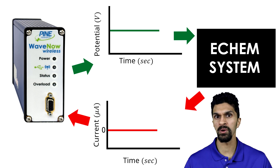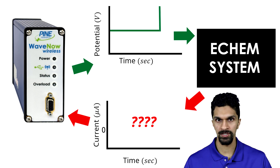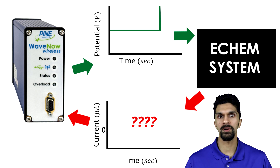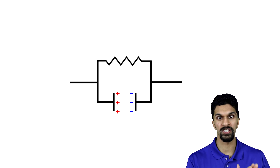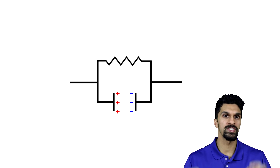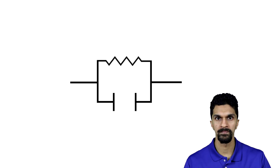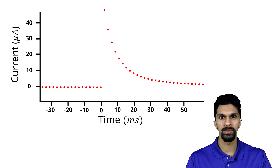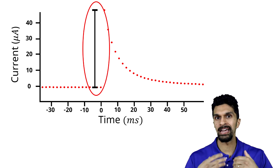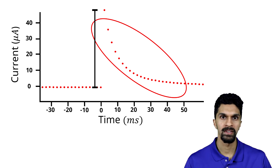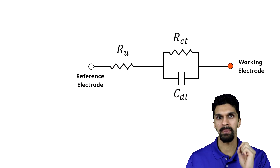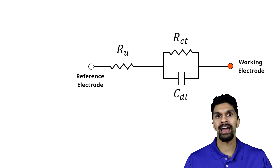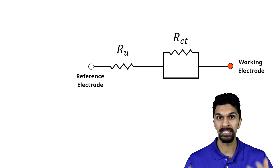A similar technique to current interrupt is potential step. In the potential step technique we hold the potential such that zero current flows, followed by a potential step. In current interrupt we had a charged capacitor, but in the potential step technique, because we're holding the potential such that zero current flows, we start with an uncharged capacitor. As we step the potential, we observe a current spike followed by a gradual decay. At the very beginning of the experiment, as we step the potential and observe this spike, the capacitor CDL acts like a short circuit as it begins to charge.